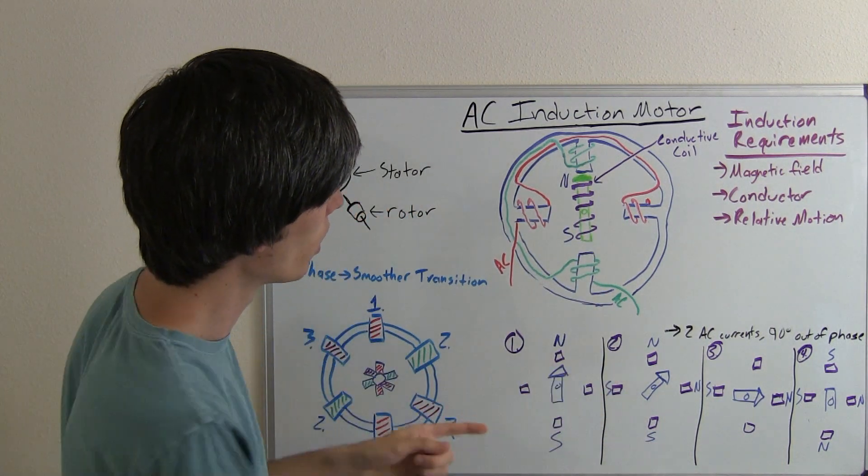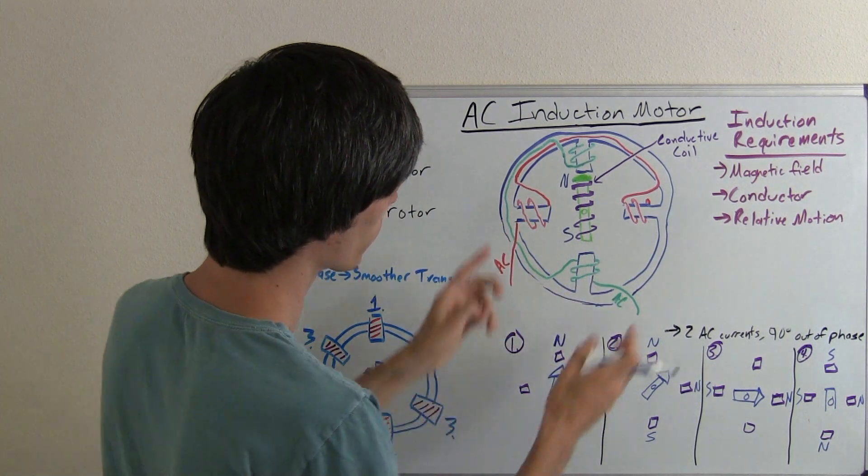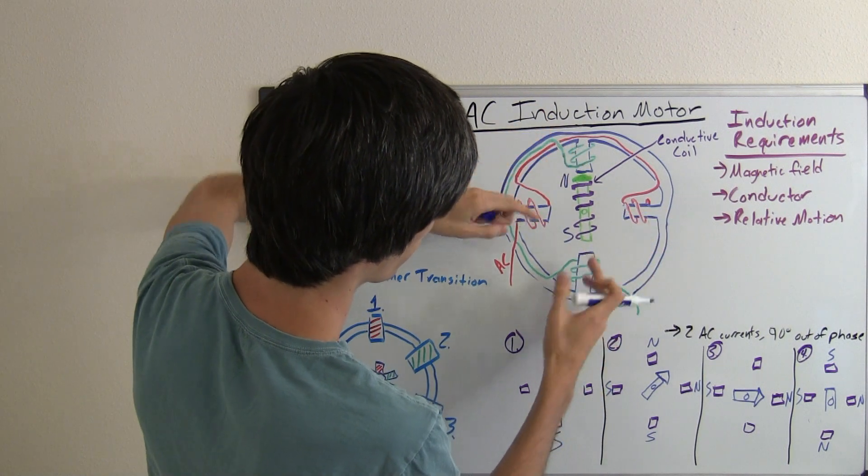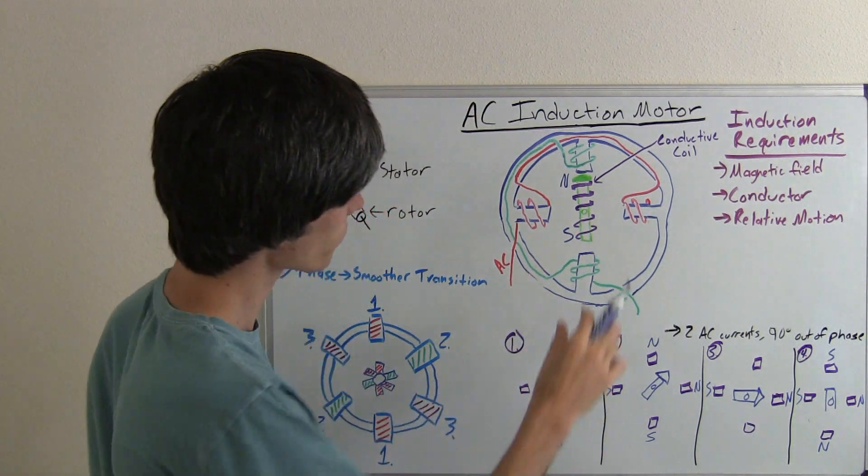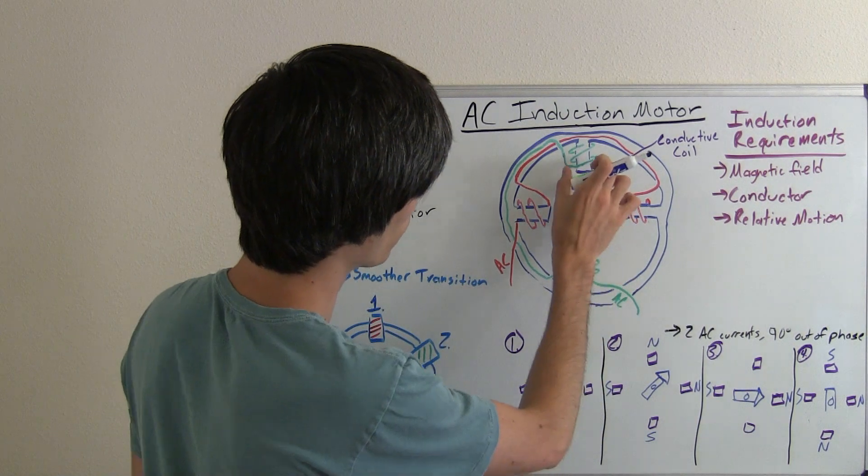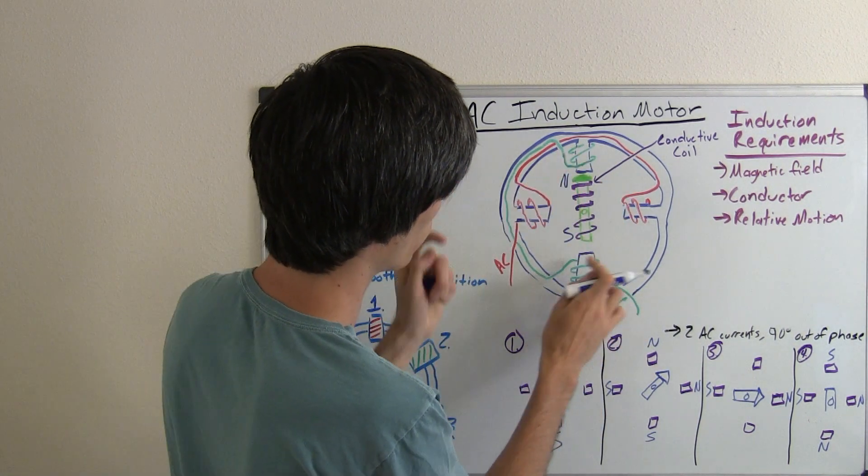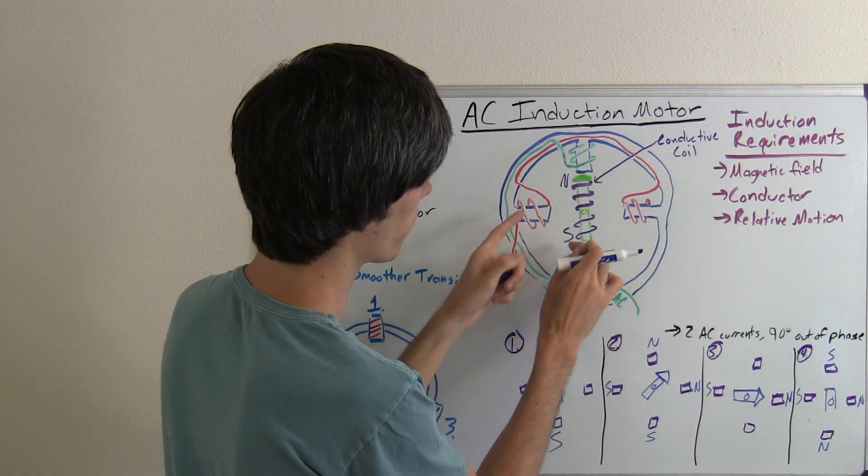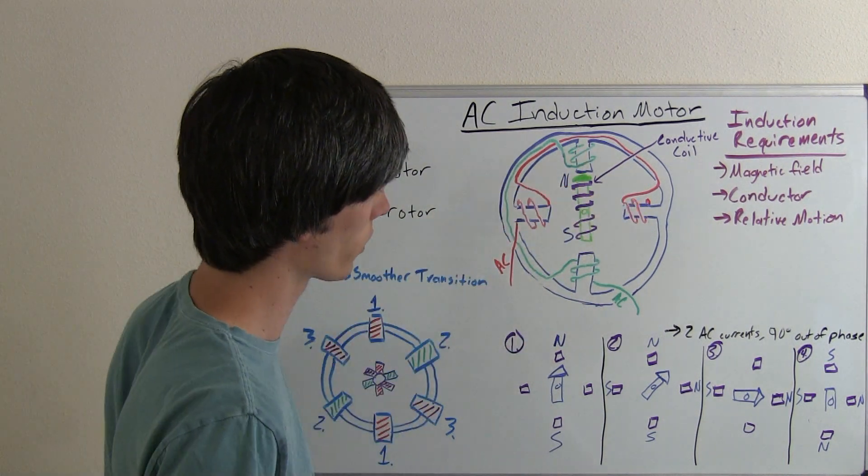At step two, when the alternating current of this coil drops and this coil starts to increase, we'll have the north and south here and then the north and south here. So this will rotate 45 degrees because of its induced current. So then the next step, the alternating current will drop to zero, so you'll have no current flowing through this coil and you'll have your current flowing through here. Now you're still going to have your induced current here, so you're going to have the north and south pole, and that's going to cause this to rotate another 45 degrees.